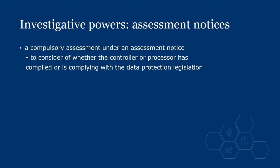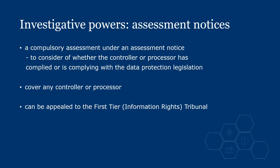Article 58 gives the Commissioner the power to carry out investigations in the form of data protection audits. These are compulsory assessments carried out under an assessment notice to consider whether the controller or processor has complied or is complying with data protection legislation. Assessment notices cover any controller or processor and can be appealed to the First-tier Information Rights Tribunal. They can require the controller or processor to permit the Commissioner to enter specified premises and direct the Commissioner to documents on the premises. Sections 146 and 147 of the DPA explain how notices are used, and an assessment notice must include timescales and information about rights of appeal.